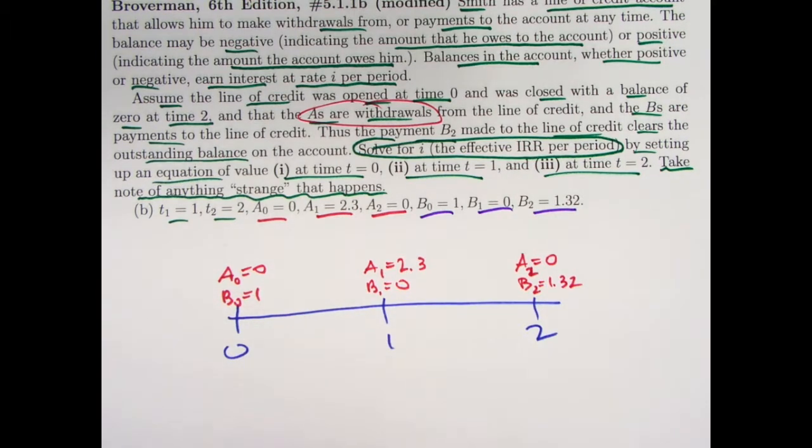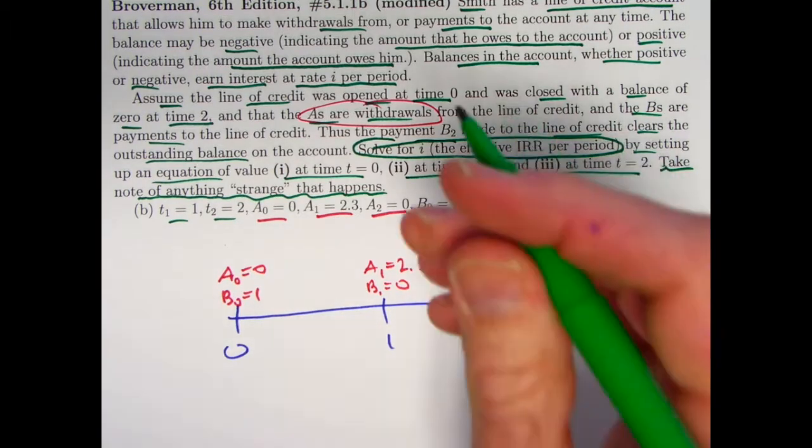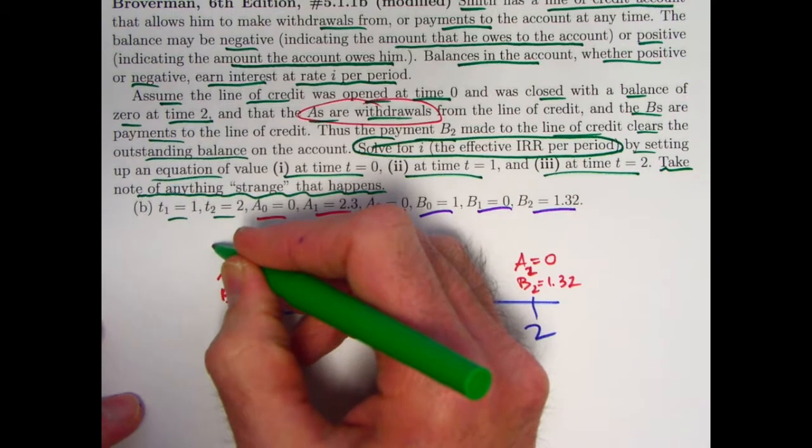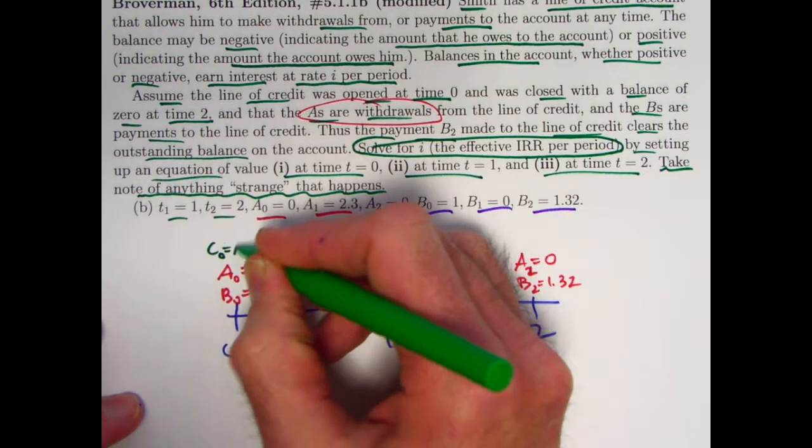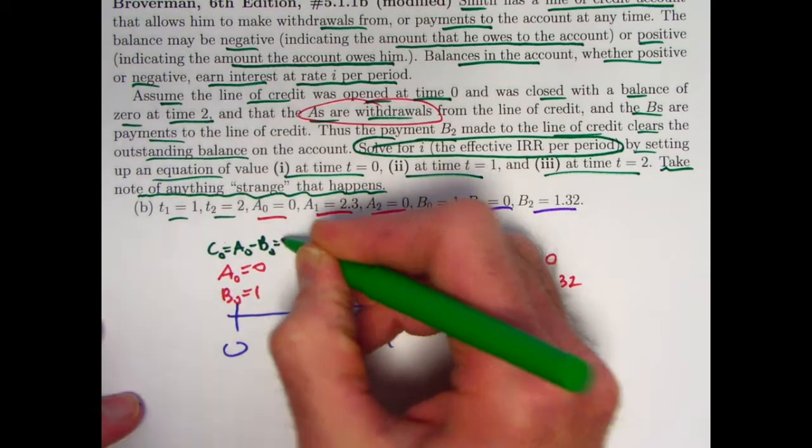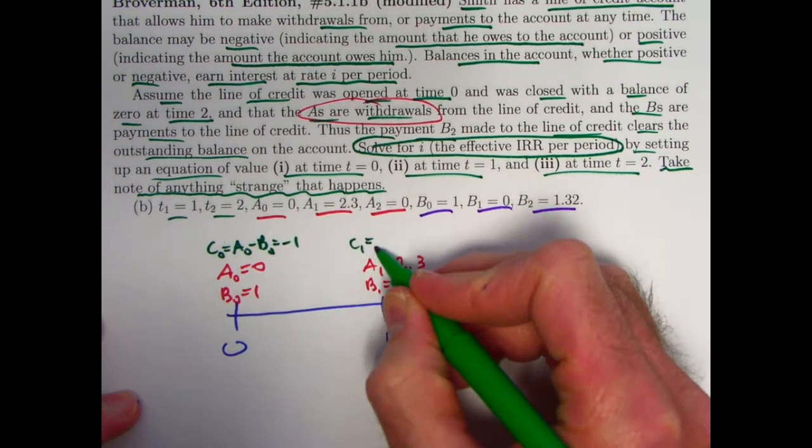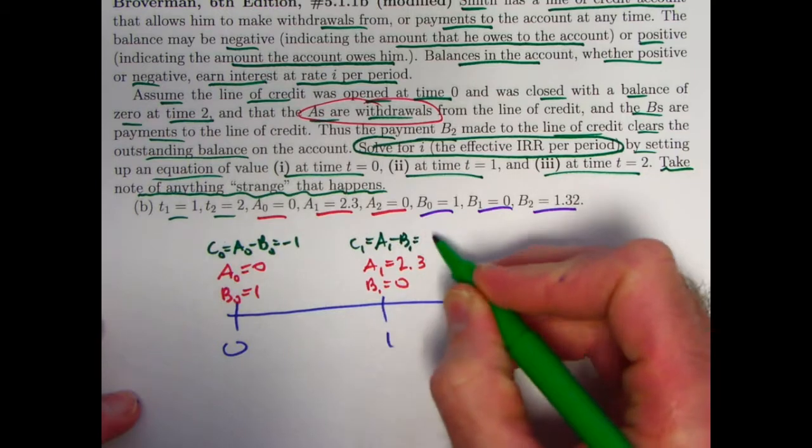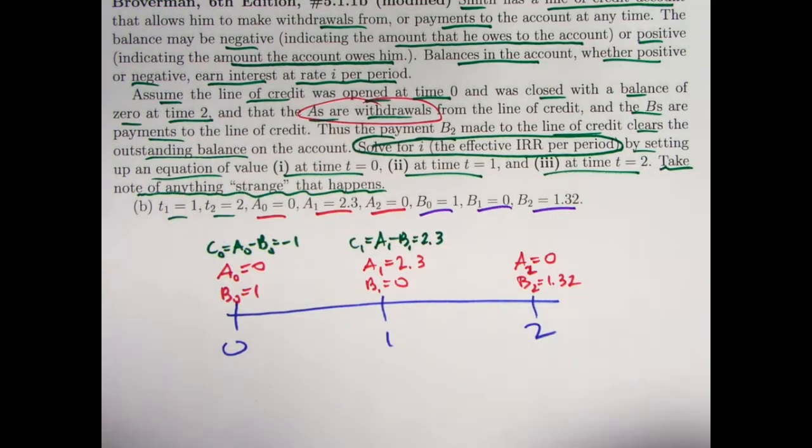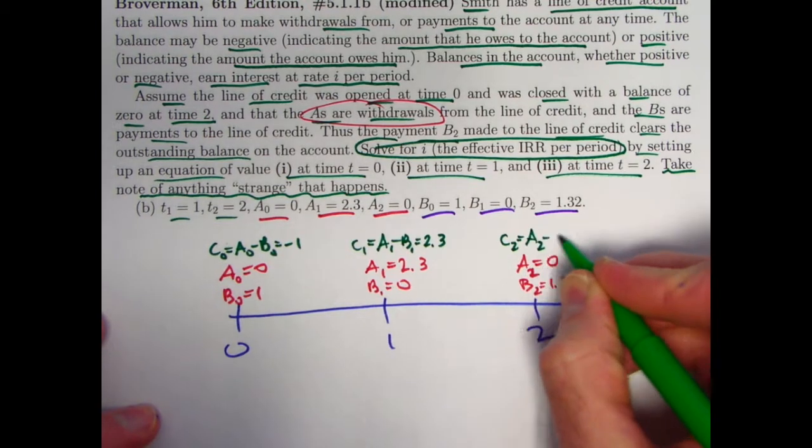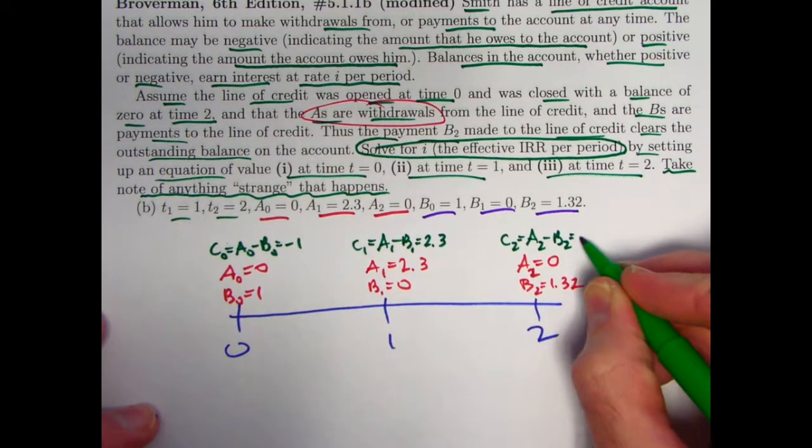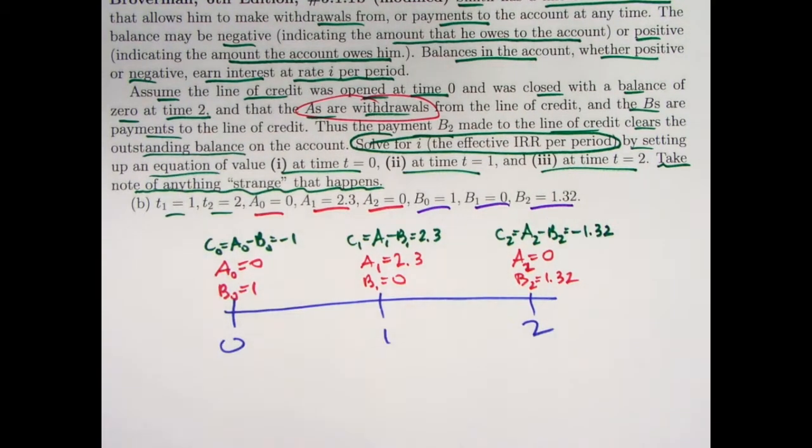It's going to be handy when you've got both inflows and outflows, money going out from Smith and money going back to Smith, to think in terms of what you might call the net amount received. And Brogermann's book calls it C. C zero would be A zero minus B zero. That would be negative one. That's money going out from Smith to the account. C one would be A one minus B one. That would be 2.3 minus zero is 2.3. That's positive. That's money coming back to Smith. C two would be A two minus B two. Zero minus 1.32 is negative 1.32. Again, that would be money going from Smith to the account to make the balance zero.